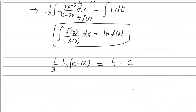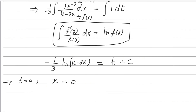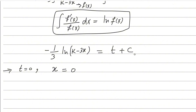Now substitute the initial values to find c. Initially the current was 0, so when t = 0, x = 0. Substituting into the equation: minus 1/3 ln(k) = 0 + c, so the value of c is minus 1/3 ln(k).